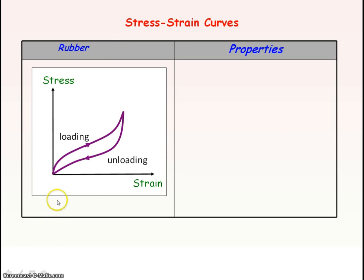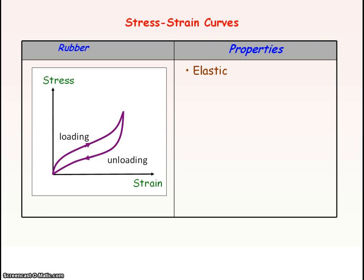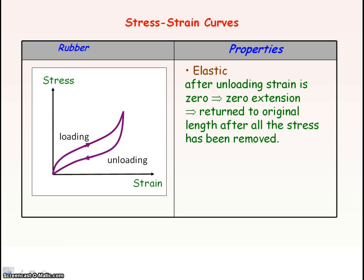Here is the stress-strain graph for rubber. Loading is when we are adding stress and unloading is when we are removing stress; they do not follow the same pathway. However, after unloading we return to a strain of zero, meaning an extension of zero, so the material returns to its original length after the deforming stress is removed — it is an elastic material. Even so, the graph is not a straight line through the origin, so stress is not proportional to strain, and rubber does not obey Hooke's law.